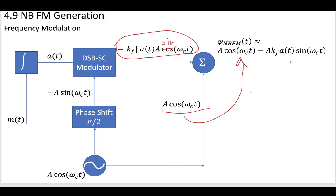Then we sum it with a carrier-only component to get a narrowband FM approximation. Using a DSB-SC modulator and a phase shifter, we could generate narrowband FM or PM waves that are approximations of our FM or PM signal at the carrier frequency.